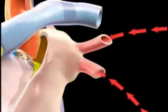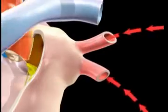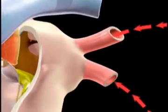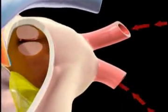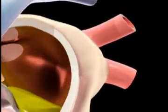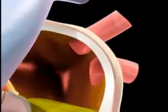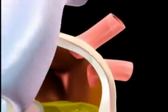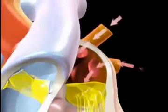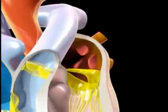After passing through the circulation of the lungs, the blood, having been recharged with oxygen and having rid itself of carbon dioxide, is returned through the pulmonary veins to the left atrium. The left atrium, too, contracts, forwarding blood into the left ventricle in order to fill it before it contracts.